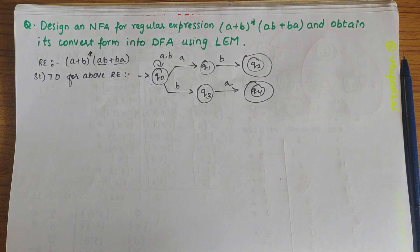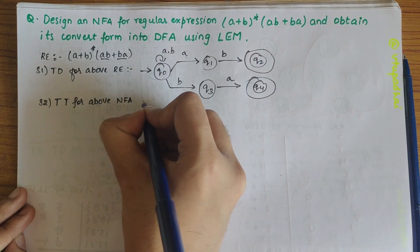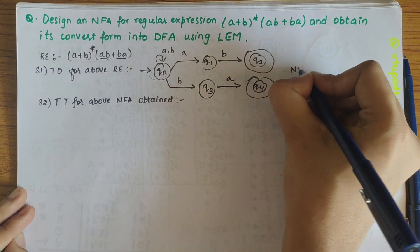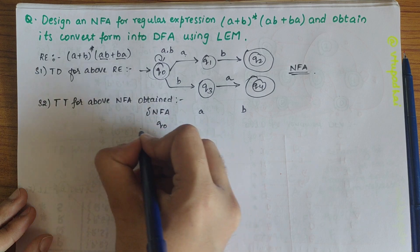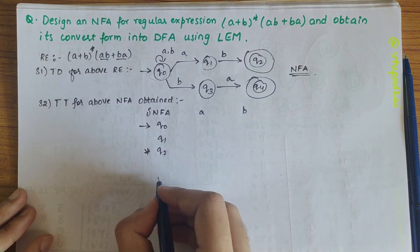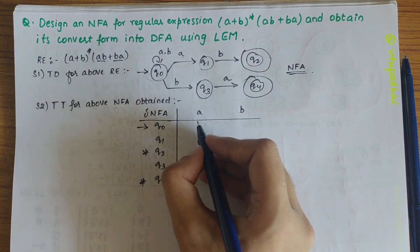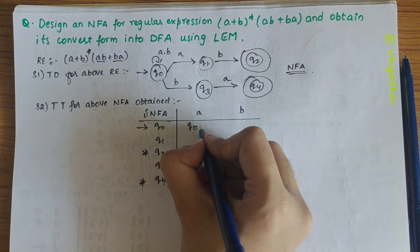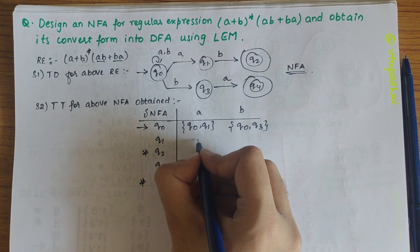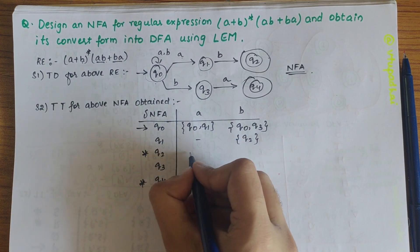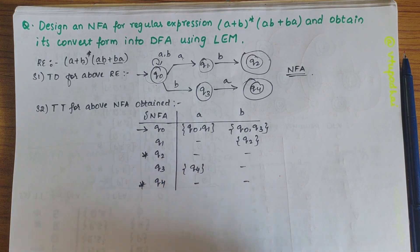Our next step is to draw the transition table for the NFA obtained. In the NFA table with inputs A and B: Q0 is the start state; Q2 is the final state of one instance and Q4 is the final state of another. Q0 on A gives {Q0, Q1}; Q0 on B gives {Q0, Q3}; Q1 on A is unknown; Q1 on B gives Q2; Q2 on A and B are unknown; Q3 on A gives Q4; Q3 on B, Q4 on A, and Q4 on B are all unknown.